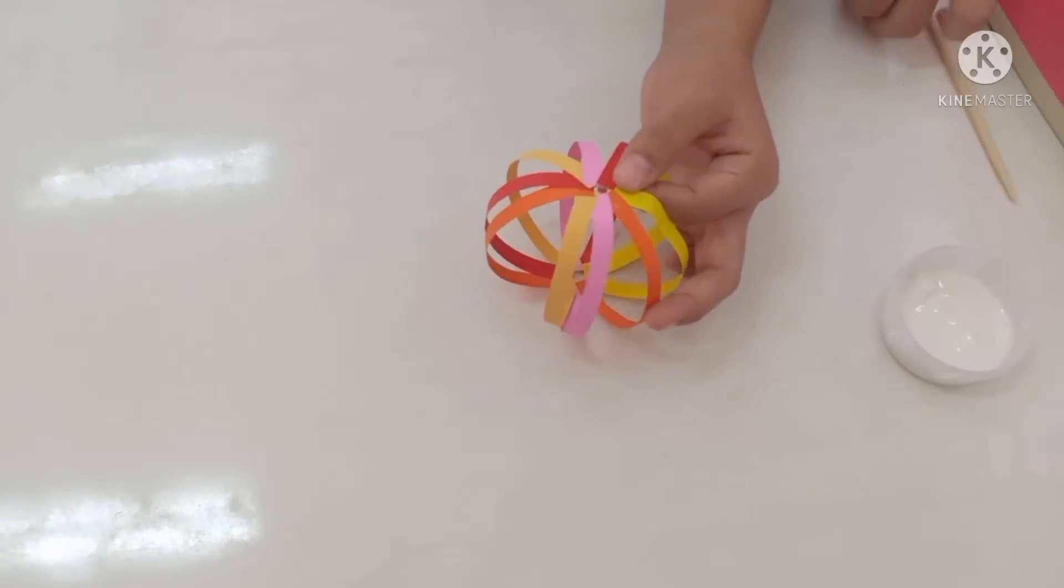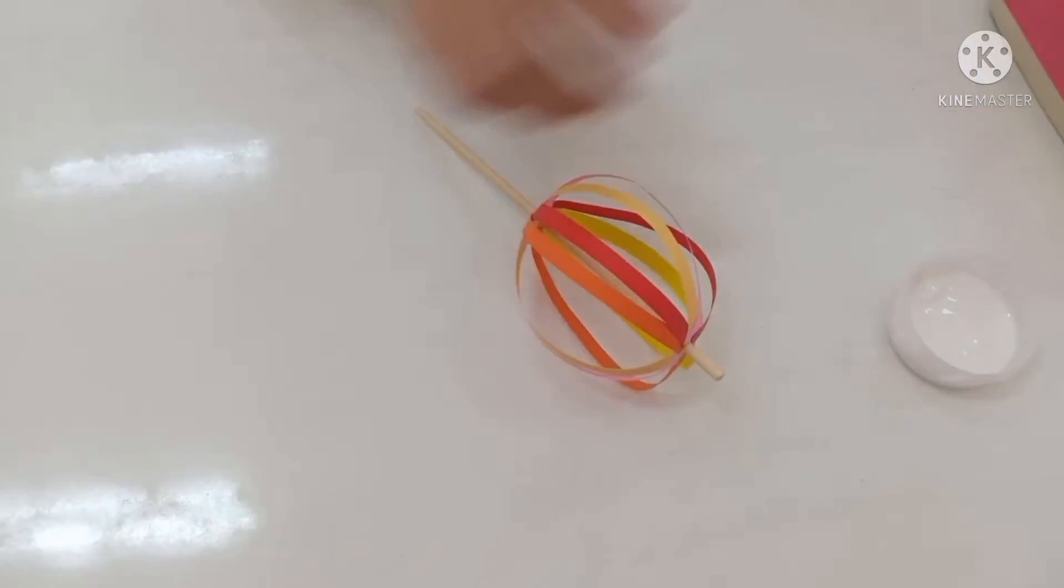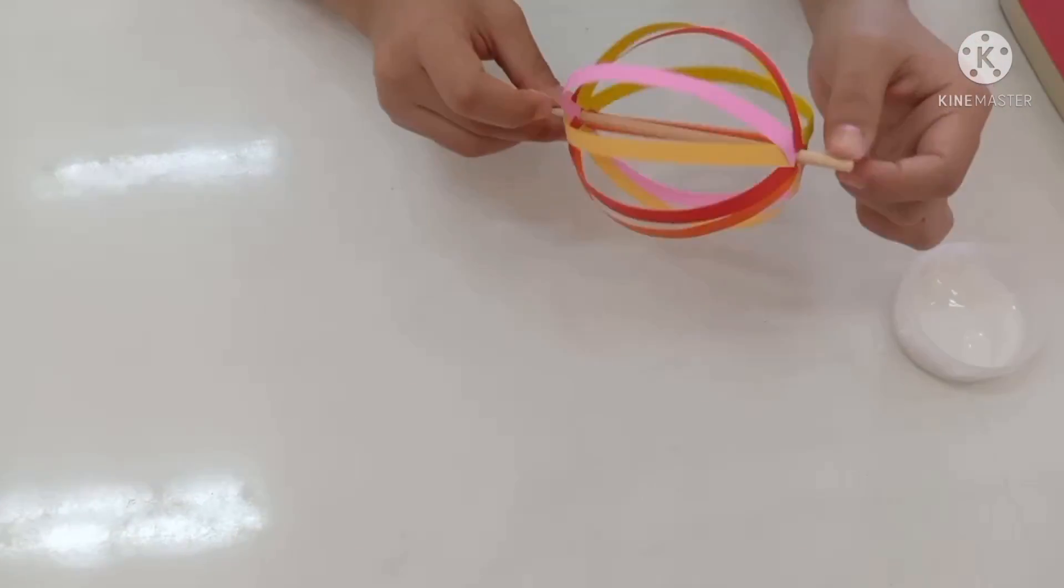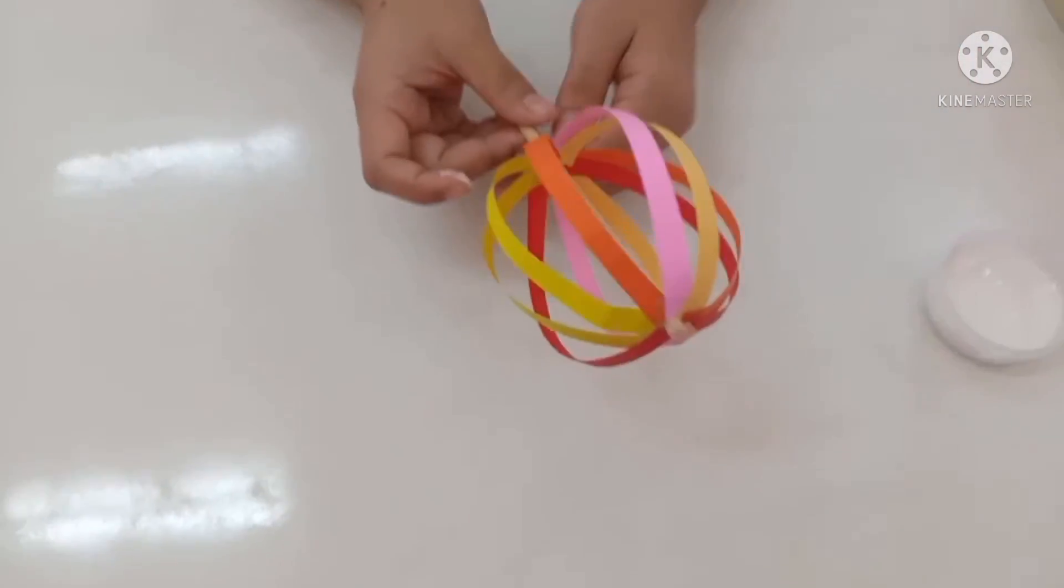There we go. Beautiful. And then, we're going to stick our chopstick through the two circles. We're going to put a little bit of tape around the top to hold it in place. All right. Beautiful.